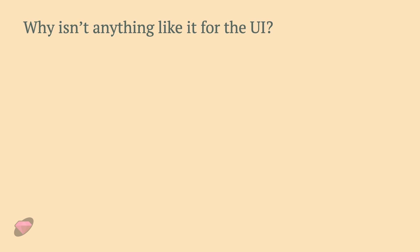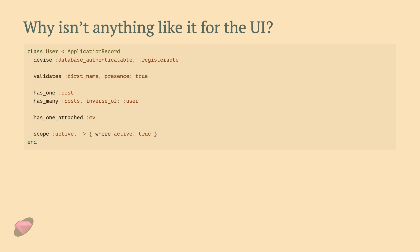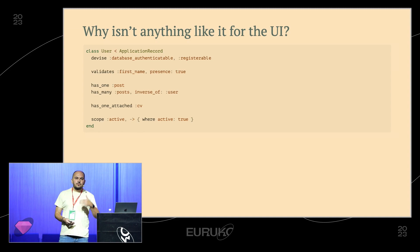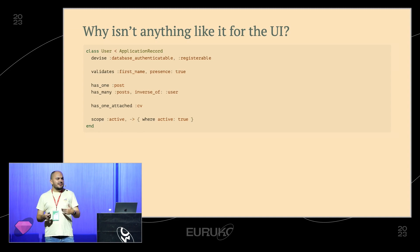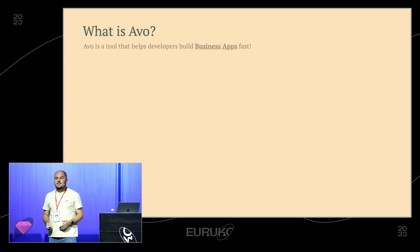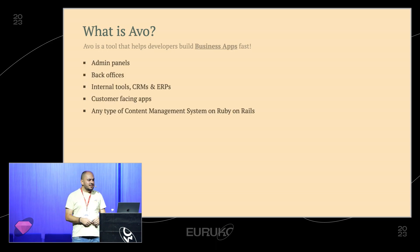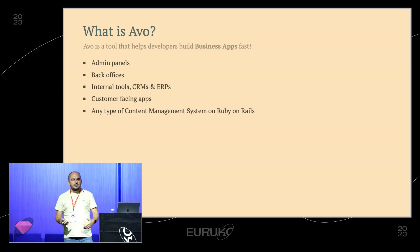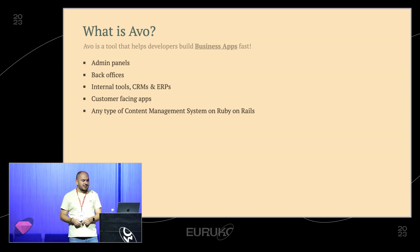Getting back to Rails' declarative nature — I was thinking, why don't we have something like this for the UI? Why don't we have a DSL to build our UIs and frontend things? We kind of do: we have Active Admin and Rails Admin, which are a little subpar for users and for developer experience. This is why I built Avo — a tool that helps developers build business apps fast: admin panels, back offices, internal tools, CRMs, ERPs, ticketing apps, content management systems.